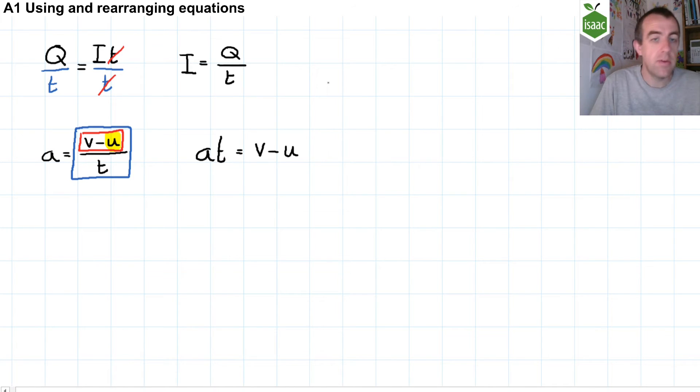Now the next thing that happens is that U is subtracted from V. Another equally correct way of saying this is that minus U is being added to V. There's a minus U on the right-hand side, there's a plus V on the right-hand side. So to eliminate the plus V, we have to subtract V from both sides, and you can see that plus V minus V cancels out.